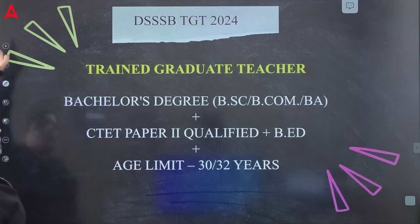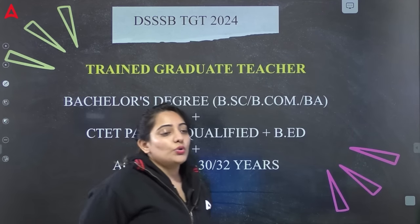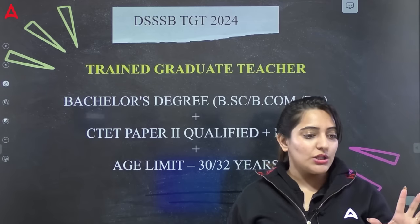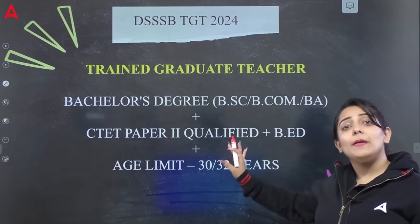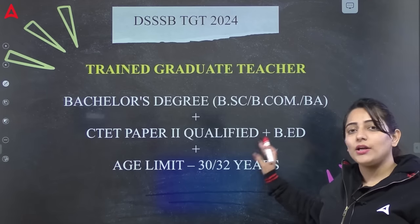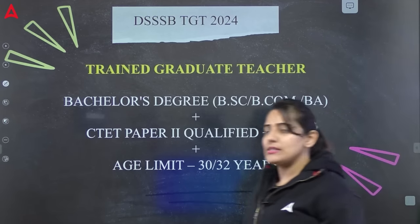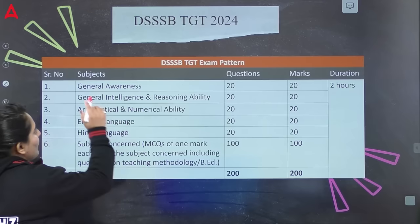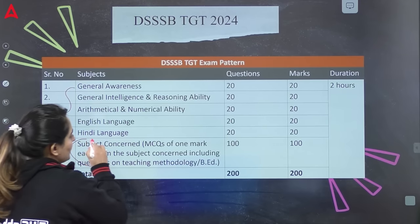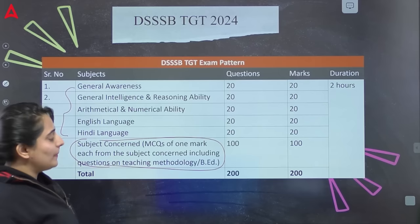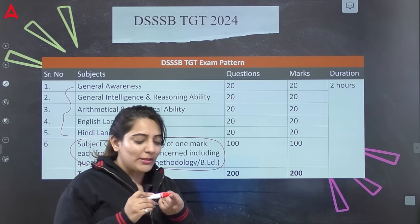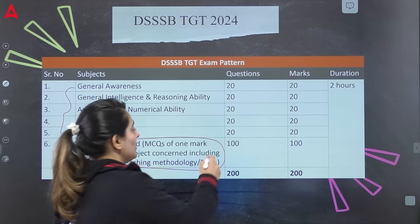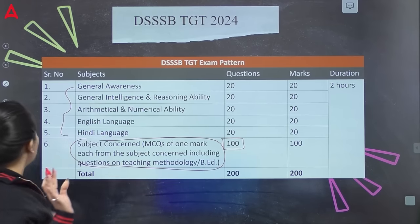अगर TGT की बात करें तो minimum requirement है graduation — B.Sc., B.Com, या B.A. में Bachelor's degree। साथ में CTET Paper 2 qualified होना चाहिए और B.Ed होनी चाहिए। Age limit 30-32 साल के around होती है। Exam pattern में Paper 1 same रहता है। Paper 2 में जिस subject में graduation की है और जिस post के लिए apply करोगे, उसी subject की teaching methodology और core subject से related questions आते हैं — 100 number के। यह भी 200 number का, 2 घंटे का paper है।